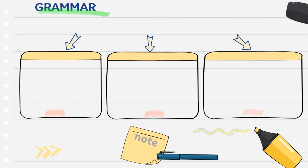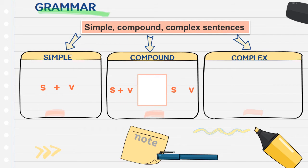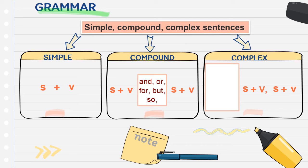To make our lesson clearer, here is a summary. We have three sentence types: simple, compound, and complex. Simple sentence: one subject and one verb. Compound sentence: two independent clauses joined by coordinating conjunctions such as and, or, for, but, so. Complex sentence: one independent clause plus one or more dependent clauses, joined by subordinating conjunctions like when, why, because, although, if, so that. Note: the dependent clause can come before or after the independent clause.